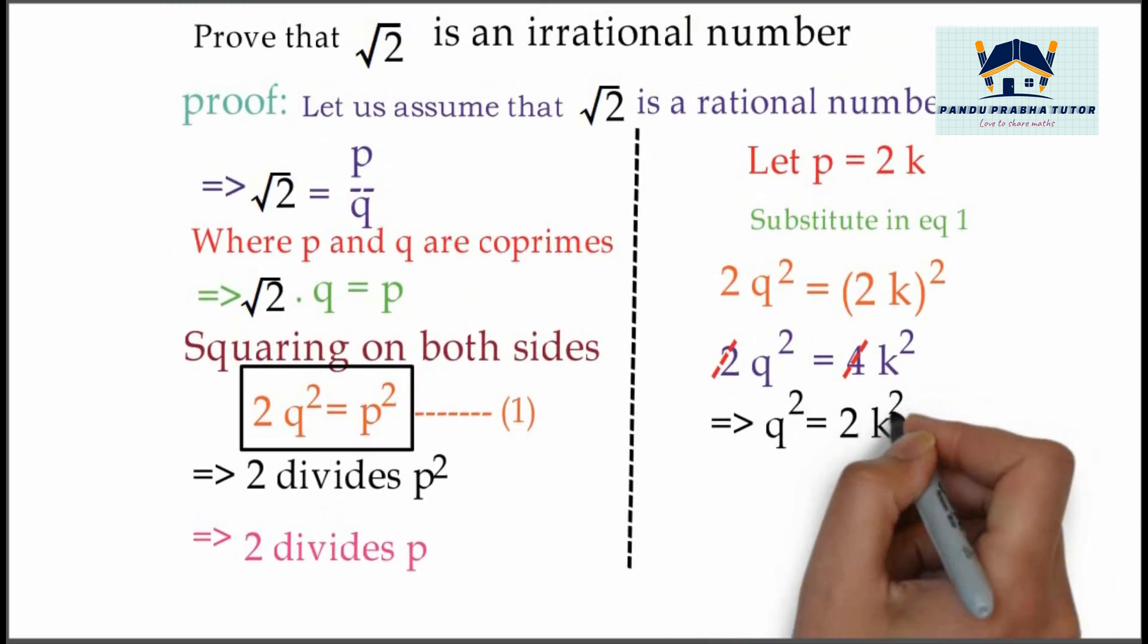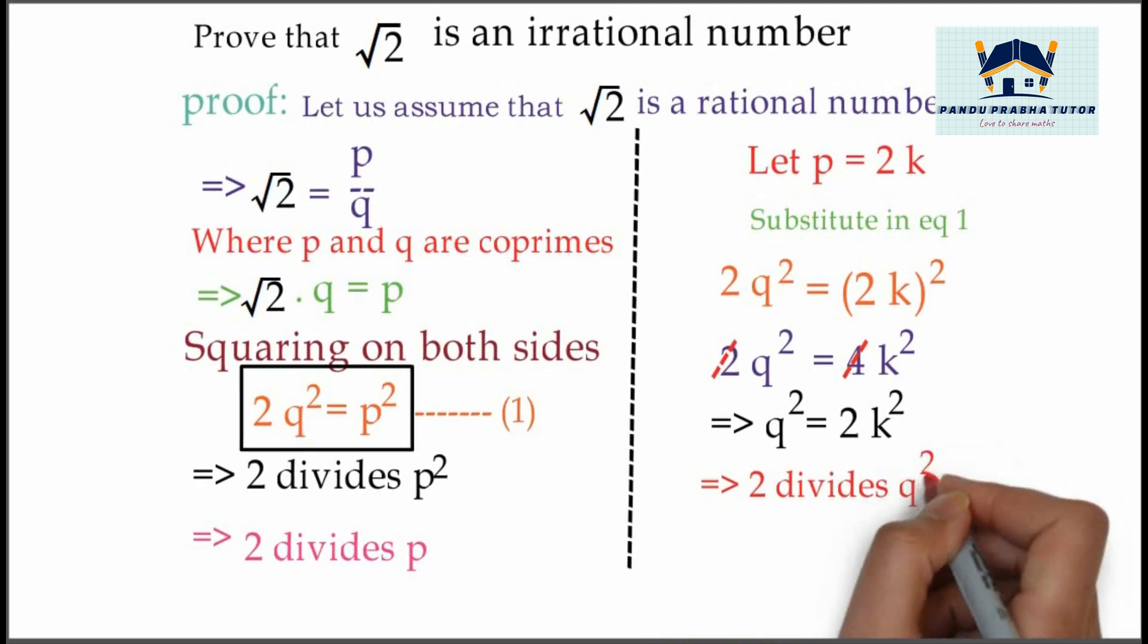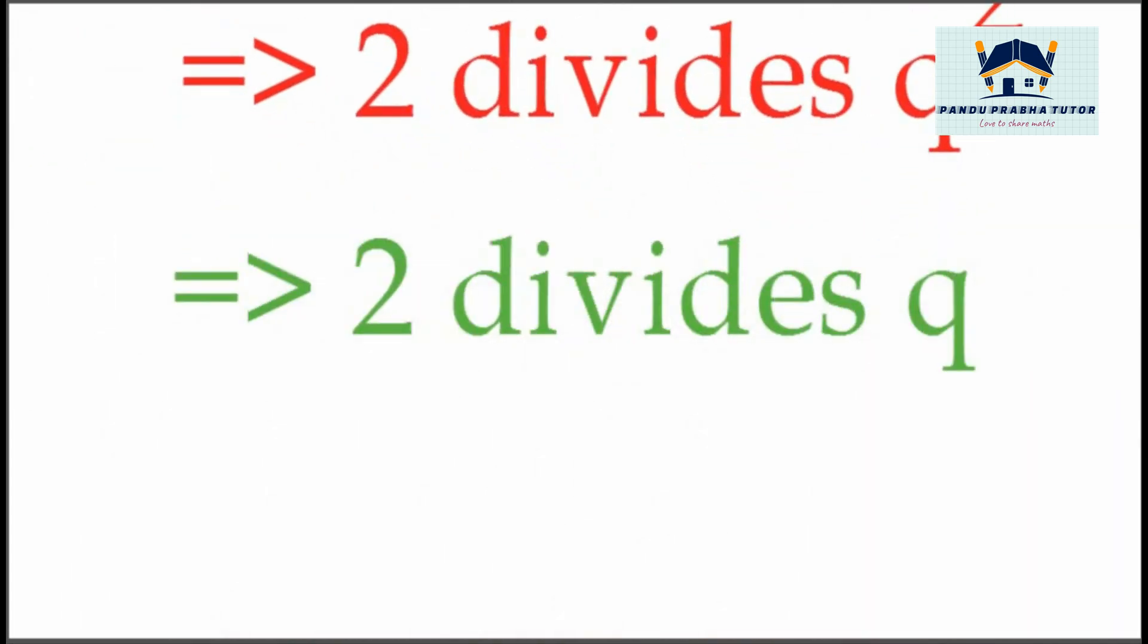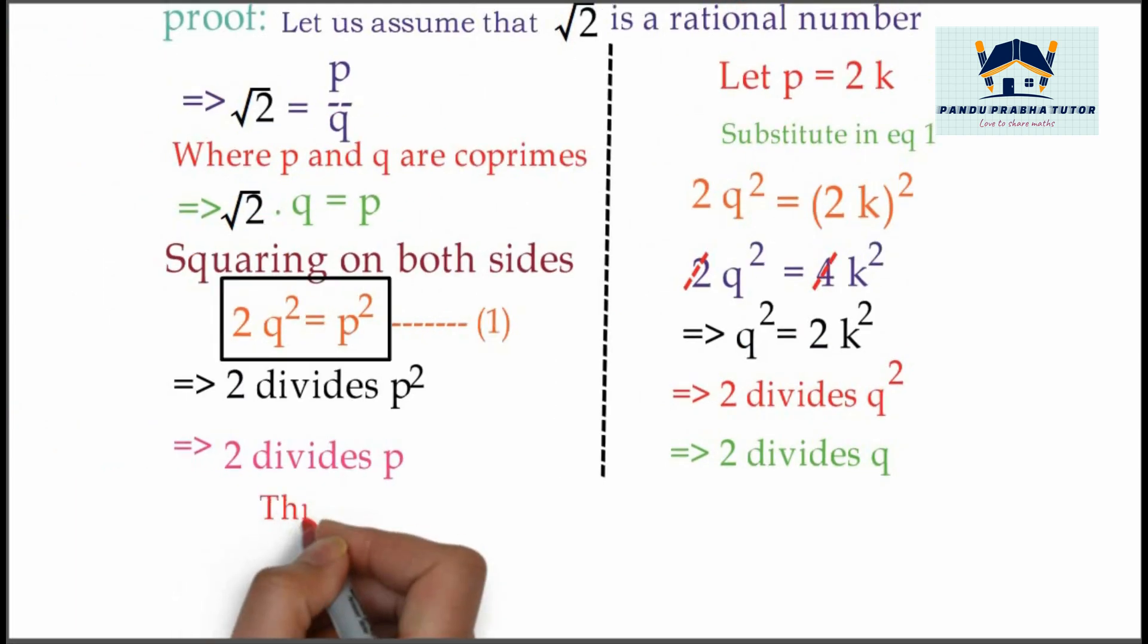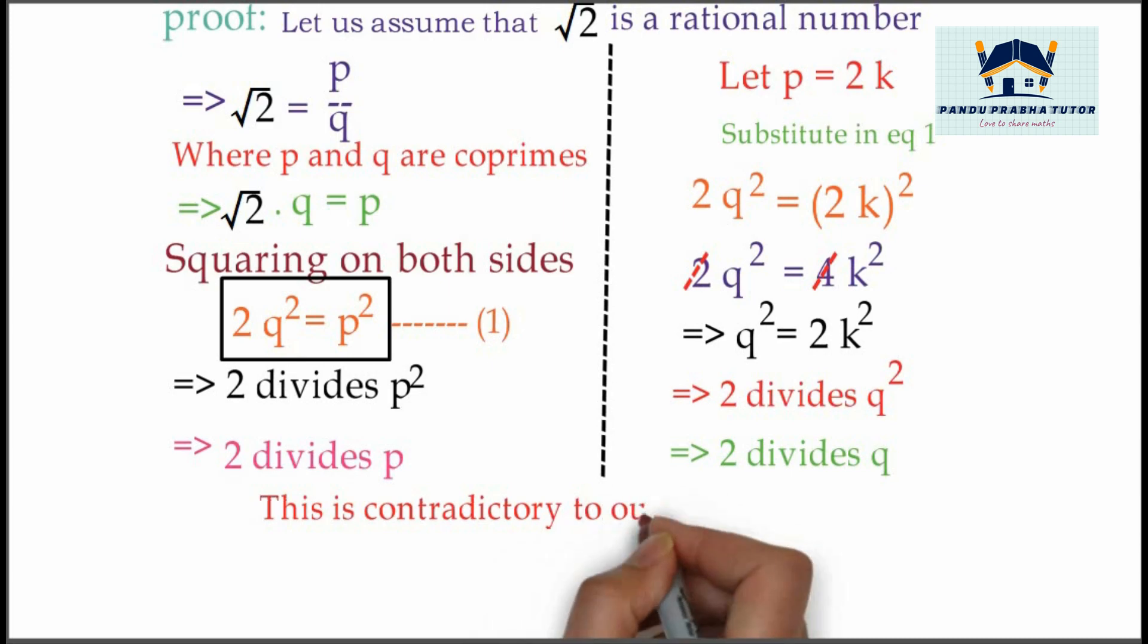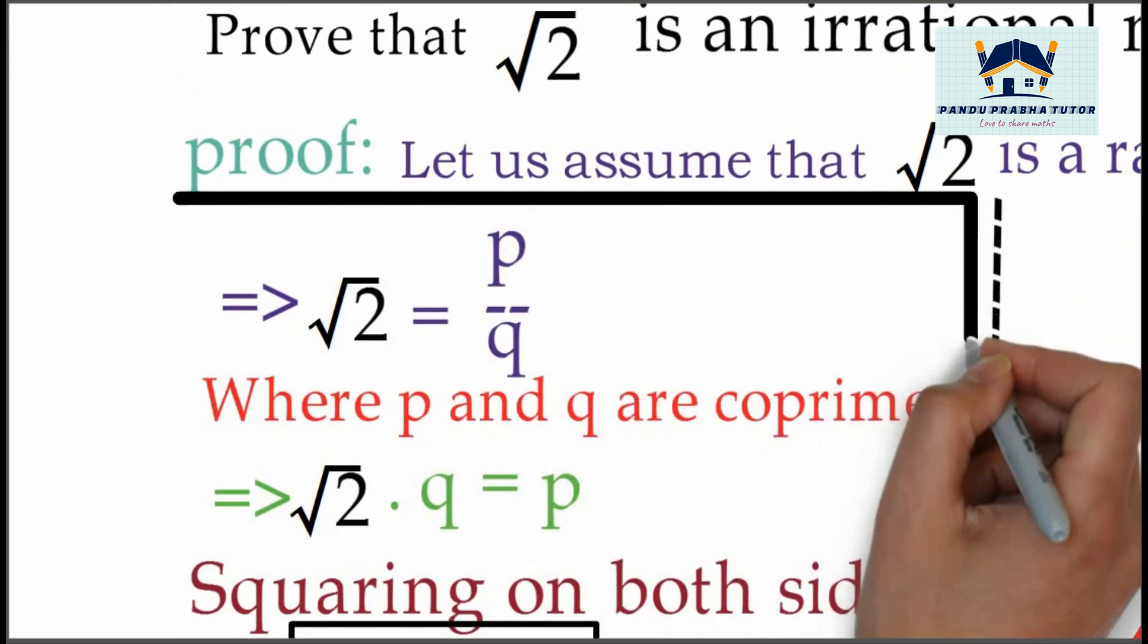This implies 2 divides q², which implies 2 divides q. This is contradictory to our assumption, because 2 divides both q and p, but in our assumption we taken p and q are co-primes.